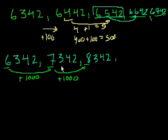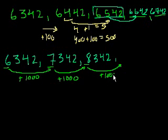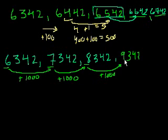So let's just keep adding 1,000. How do we do that? We increment the thousands digit. To add 1,000, we'd get 9,342. Now this is interesting — what happens when we add 1,000 to this? Well, we could say we have 10 thousands, and when we actually read it, that's essentially how we're going to read it. But the way you should view this is: you can never have 10 in any one place. We can't have a 10 in the thousands place.